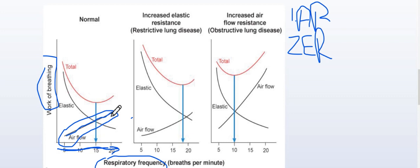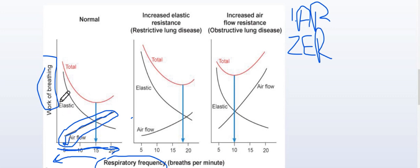If we move toward the other side, the airflow resistance is decreasing, but the elastic resistance is increasing comparatively — you can see this on the graph.